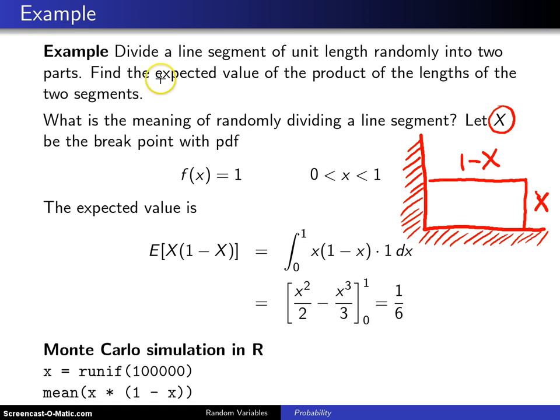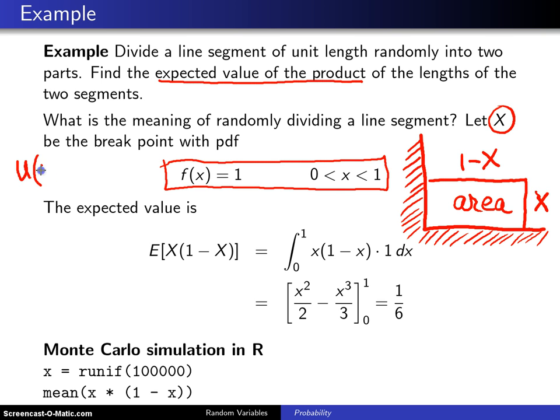In any case, we're interested in the expected value of the product of those two lengths, and x times 1 minus x will be the random area of this enclosed region here. So when you interpret the meaning of randomly dividing a line segment, it is not unreasonable to assume that that breakpoint x is uniformly distributed between 0 and 1. We've seen this distribution before. This is the way we denote it as the uniform 0, 1 distribution.